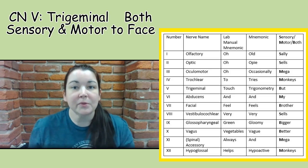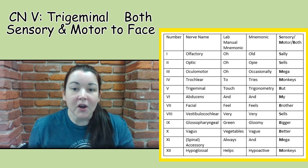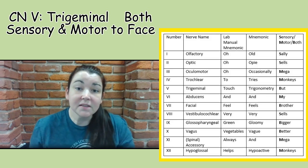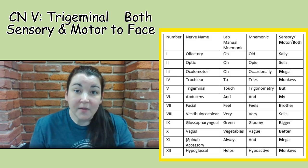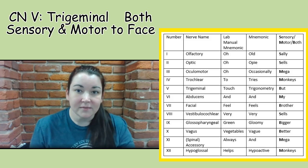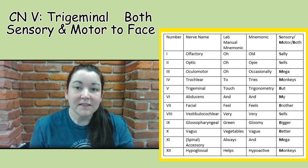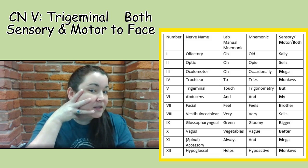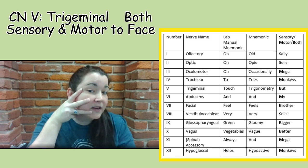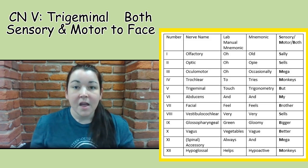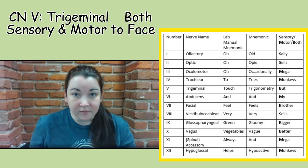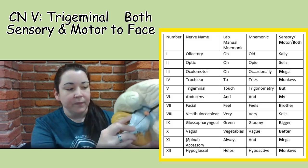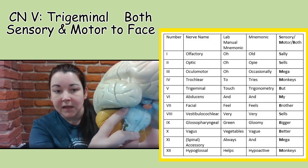The next cranial nerve is trigeminal, cranial nerve five. 'Tri' tells me it branches into threes. You can see this on the purple model as well, identified by V1, V2, and V3. Trigeminal is unique because it branches and forms other nerves. On the side of your face, trigeminal branches into an ophthalmic, a maxillary, and a mandibular branch. You can see trigeminal on the brain model at number 117 — it forms this hump here.